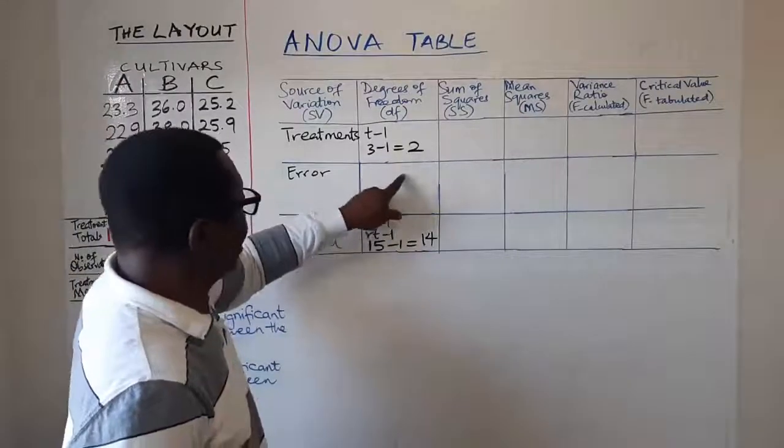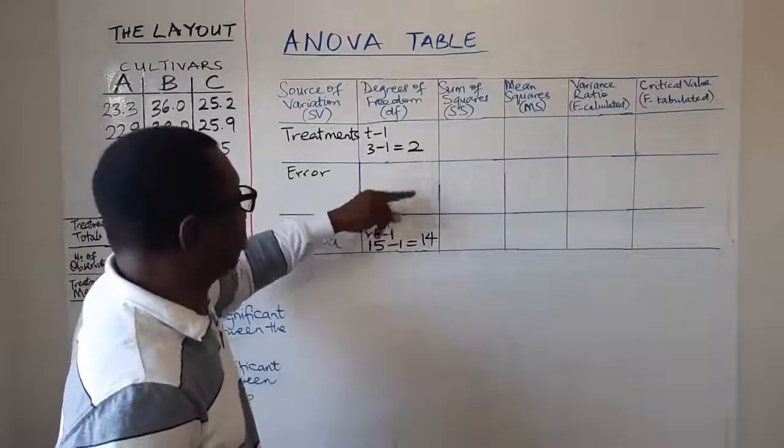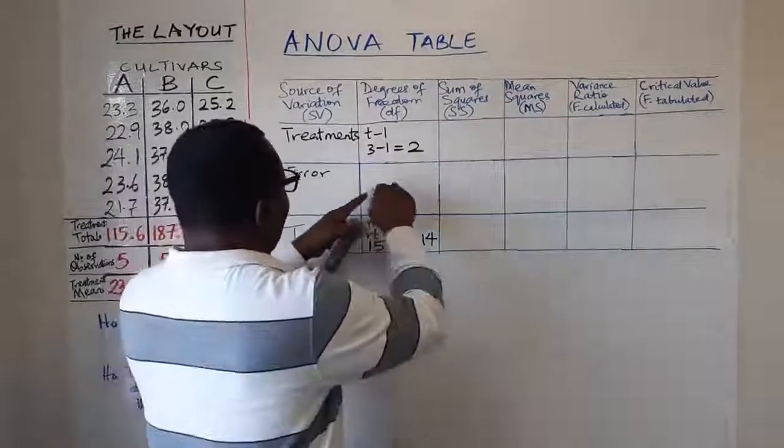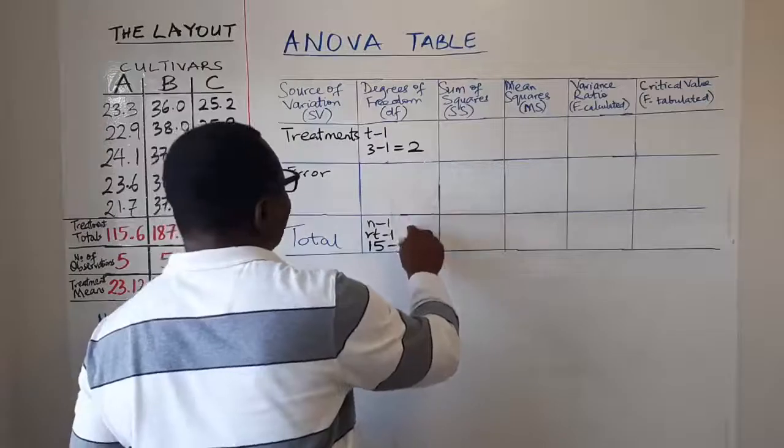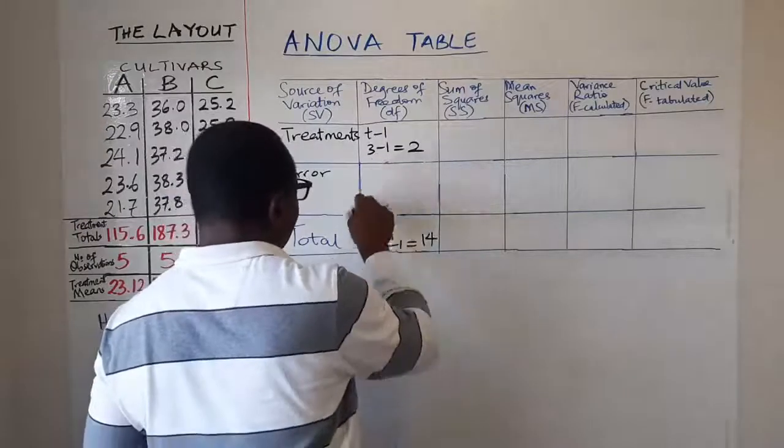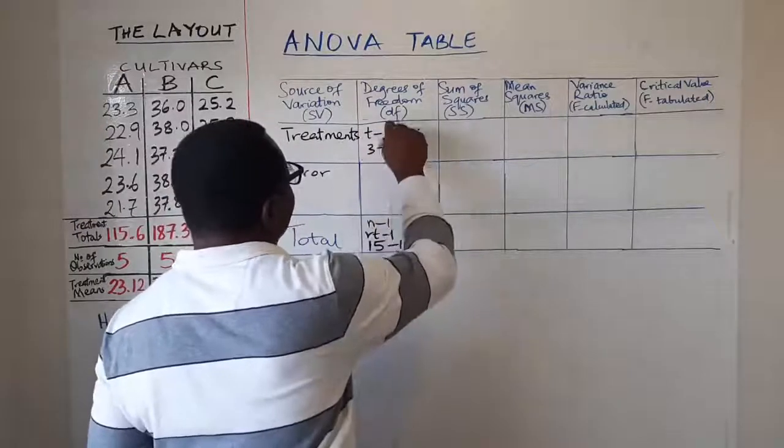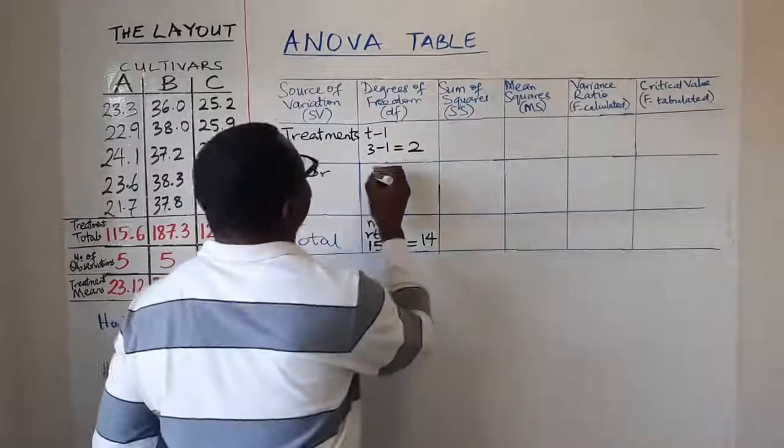Now since you have this it's easy to get this. Now we just subtract. So for error to get it, it is the degrees of freedom for total minus the degrees of freedom for treatment. In other words, we say it is simply RT minus 1 minus T minus 1.